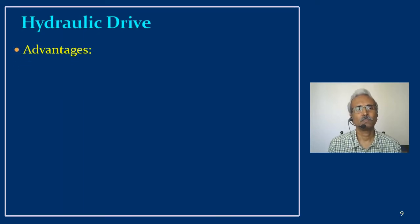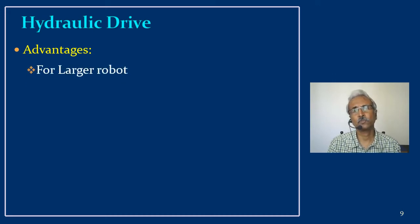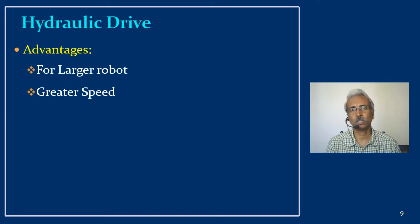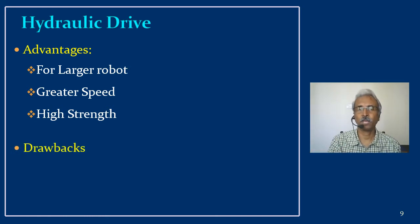What are the advantages of a hydraulically operated drive system? It is mainly used for larger robots, and provides greater speeds — the robot can operate at high speeds carrying heavy loads, as we saw in the automotive industry video. It has high strength, can operate at greater speeds, and can carry heavy payloads. Despite these advantages it also has some drawbacks.